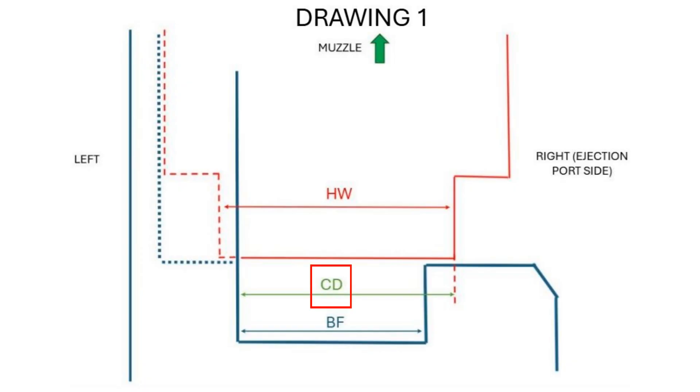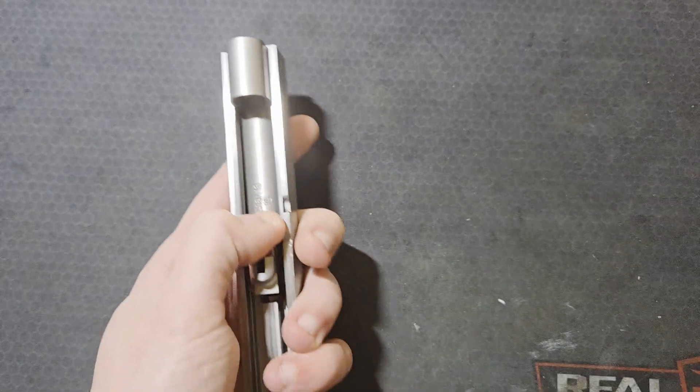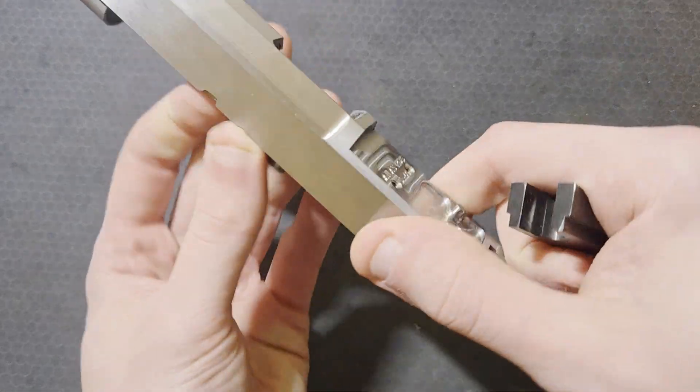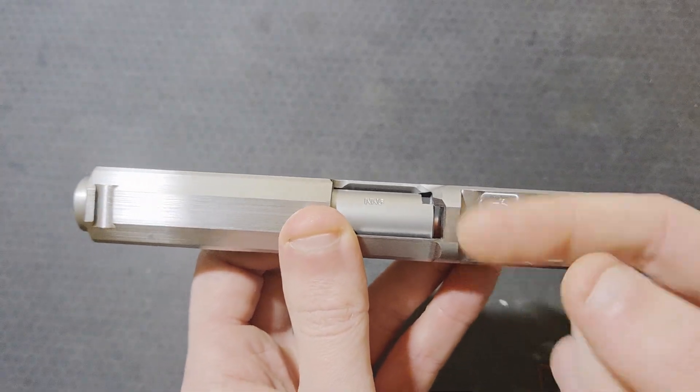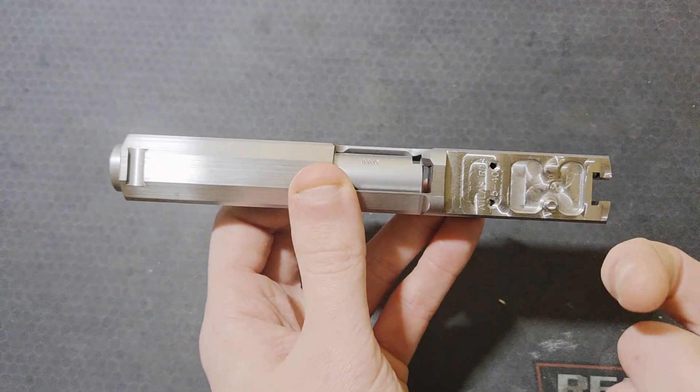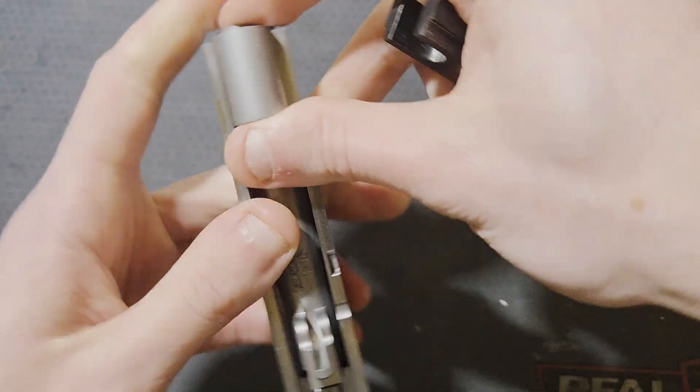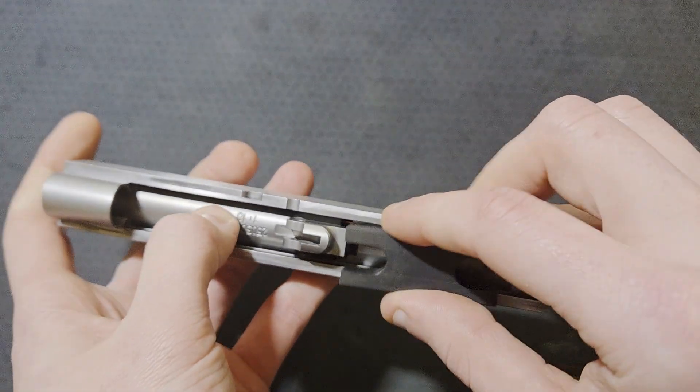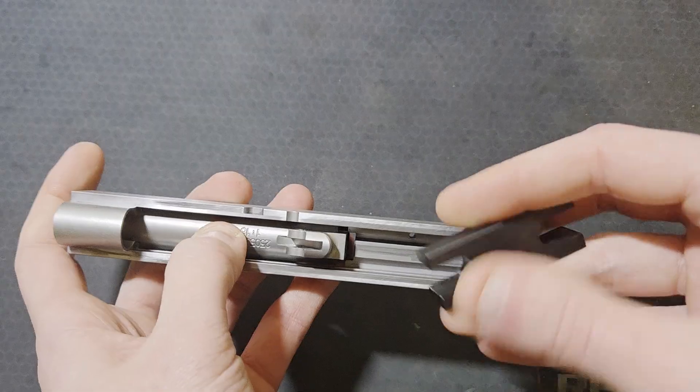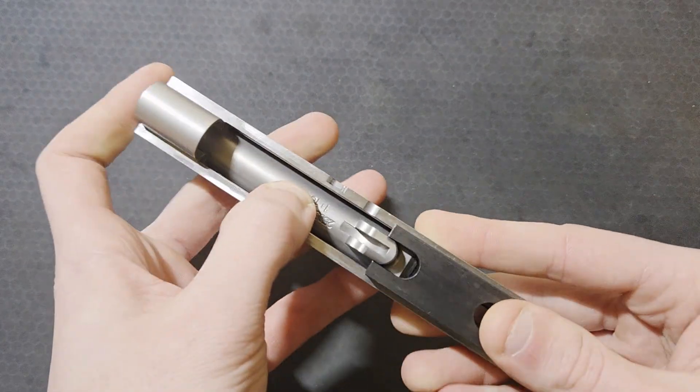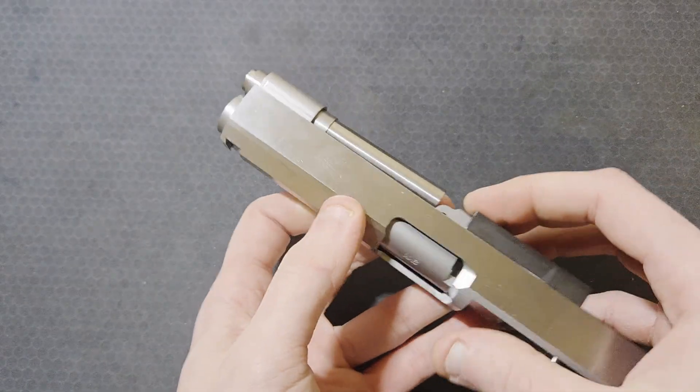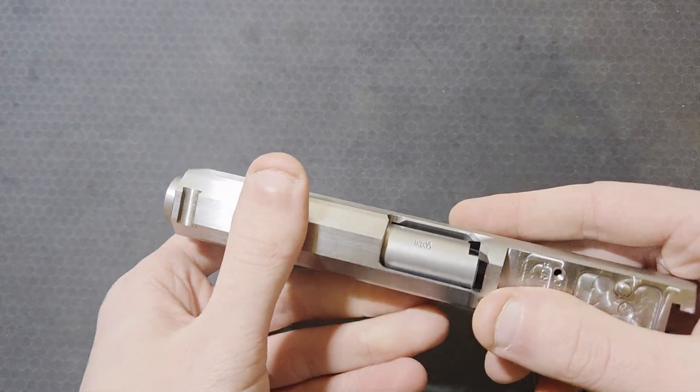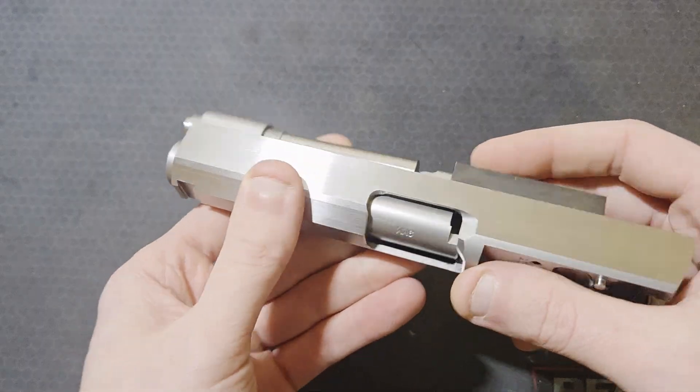We need to find the control dimension or CD. Put the barrel on the slide, push it all the way back as far as it will go. It'll stop here and not go back up against the breach face because the hood is too wide to go in the slot right now. We're going to need to use this tool to center the barrel lugs in the slide. I've also installed my barrel holder just so I don't have to fight this barrel and hold it in place while I'm trying to take measurements.